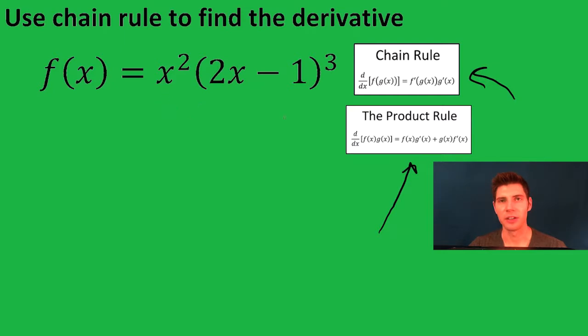I'm going to say f of x. We're going to call this our f and this is going to be our g. So f, and don't mind that this is f of x, f is going to be x squared and f prime is going to be 2x.